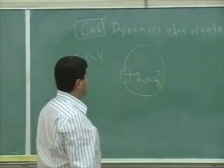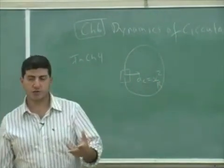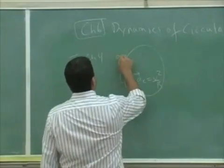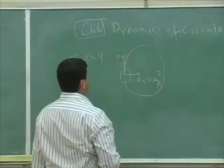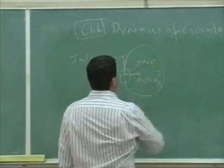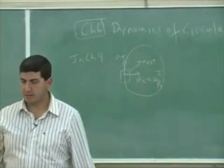And its centripetal acceleration is V squared over R. And then we said on top of that, if it has a tangential acceleration, maybe it's accelerating along the tangential direction, then therefore it has a total acceleration that is at an angle like that.